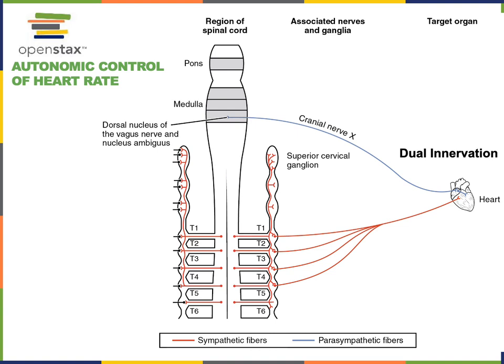Dual innervation is a common theme in autonomic regulation of visceral organs. The example here is dual innervation of the heart: the parasympathetic efferent pathways traveling through the vagus nerve, cranial nerve ten, lead to a decrease in heart rate, whereas the sympathetic efferent pathways traveling through the cervical spinal nerves stimulate an increase in heart rate as well as an increase in the force of contraction with each heartbeat.